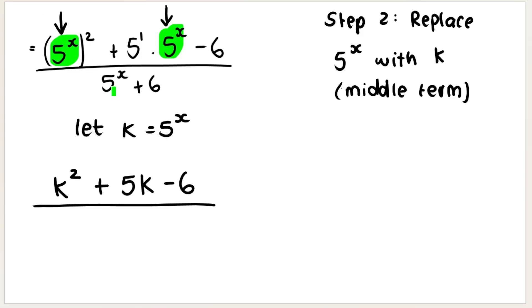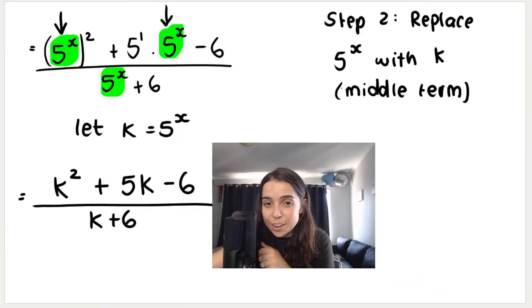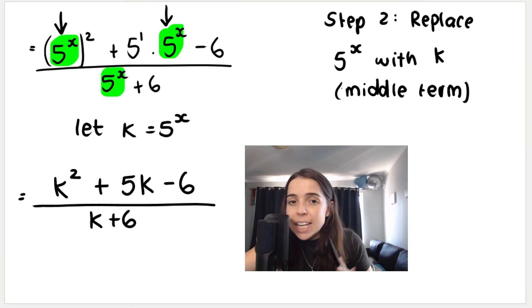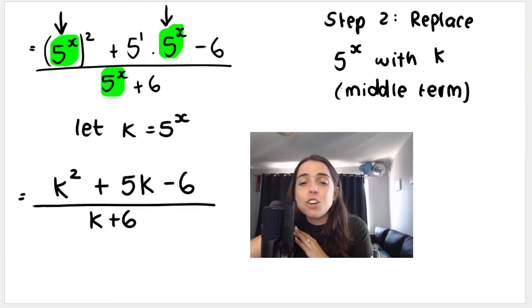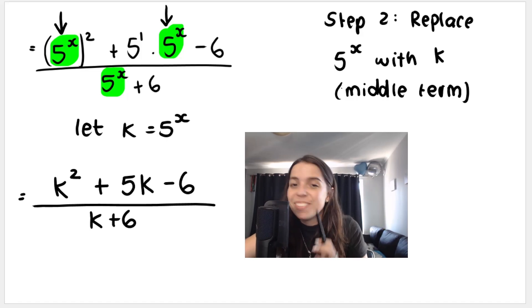Then the denominator, we're replacing 5 to the power of X with K. So it's going to be K plus 6. Now take a look at that algebraic fraction. This fraction over here should be way, way easier to simplify than this one over here. You should be used to doing this in grade 9 already. Grade 10.